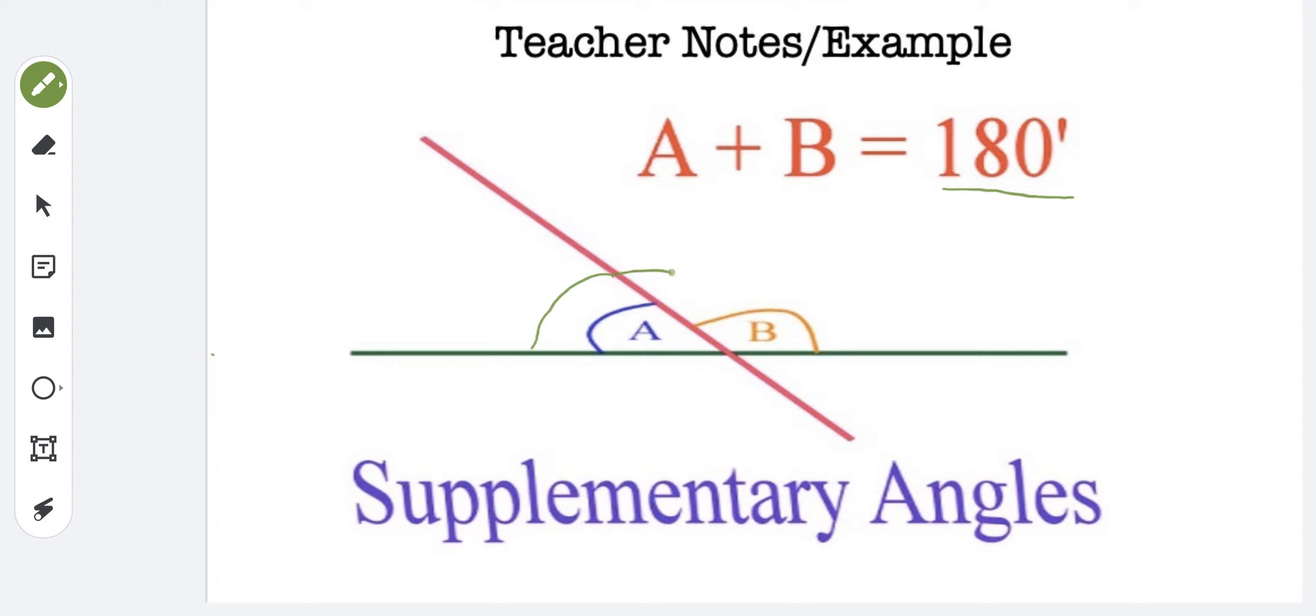So for example, let's say if this was 70 degrees, that means the angle here would have to be 110 degrees, because 110 and 70 add up to 180.